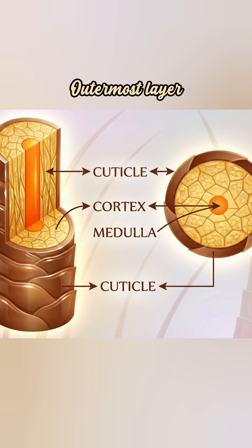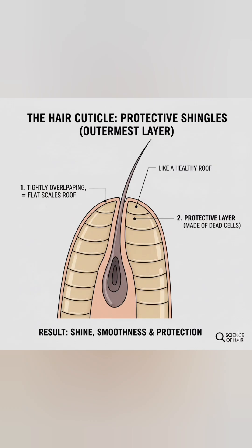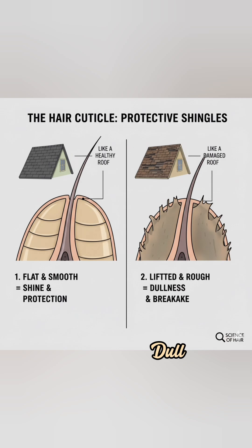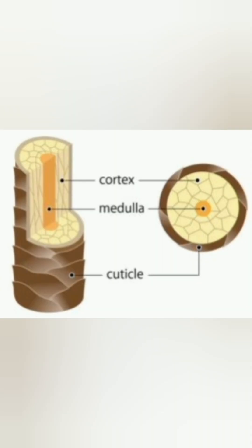The first layer is the cuticle — the outermost and most protective layer. Think of it like overlapping roof shingles. When your cuticle is healthy, these shingles lie perfectly flat, giving your hair that amazing shine and smoothness. But when the cuticle is damaged from heat or chemicals, the shingles lift up, making hair look dull, rough, and prone to breakage.